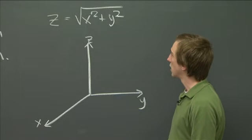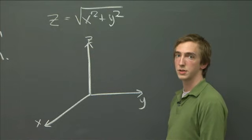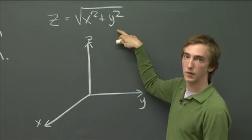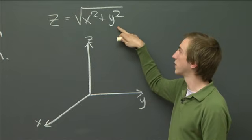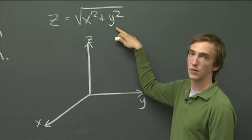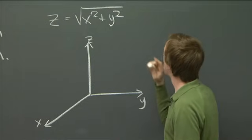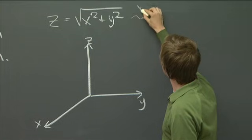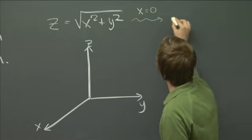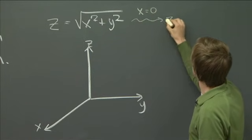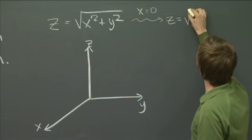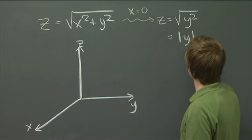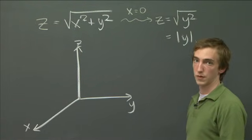So as I suggested, I think a nice way to get started with these problems is to just try setting the variables x and y variously equal to 0. And then seeing, instead of a surface in that case, then we'll get a curve, and we'll see what curve we get. So for instance, if we set x equals to 0, then we just get z is the square root of y squared. So we just get that z is the absolute value of y.